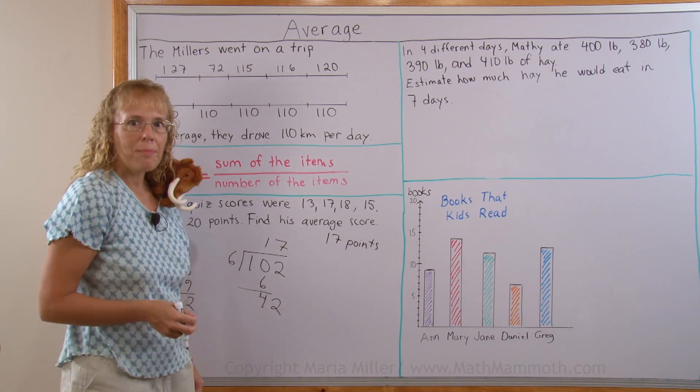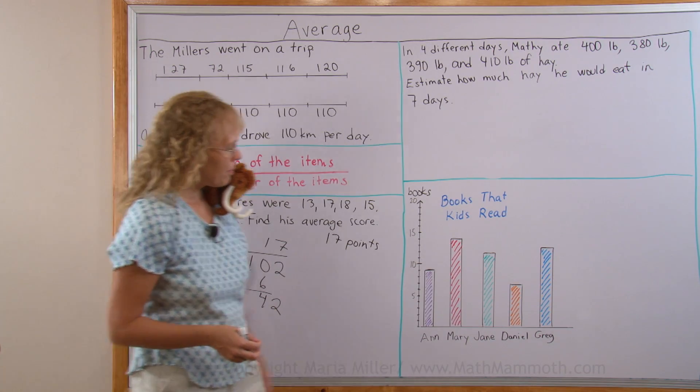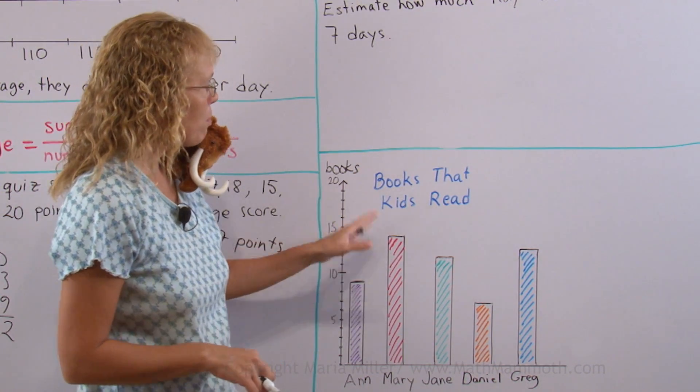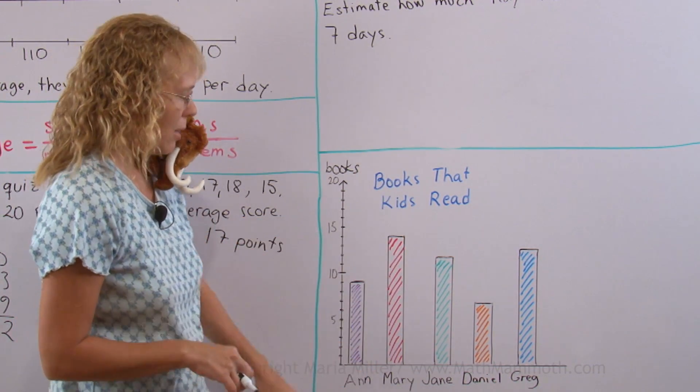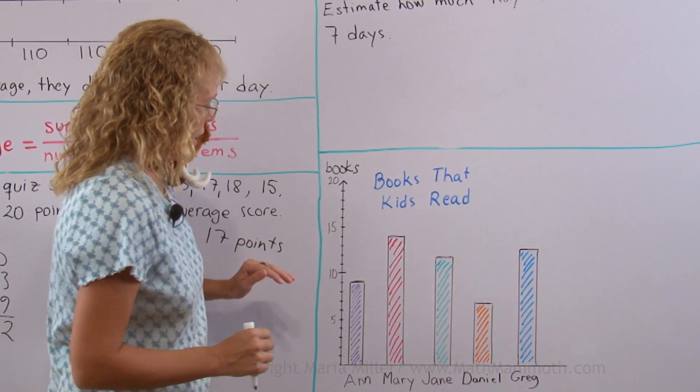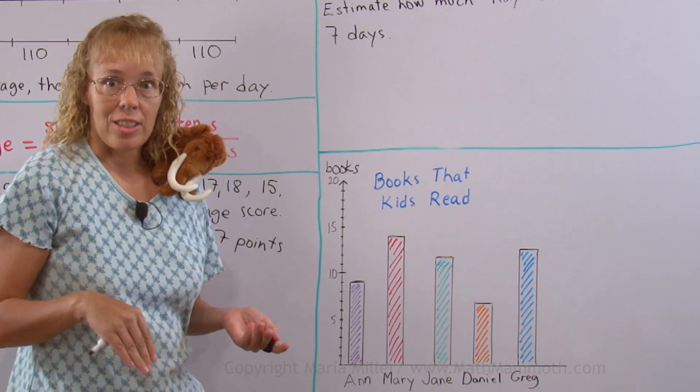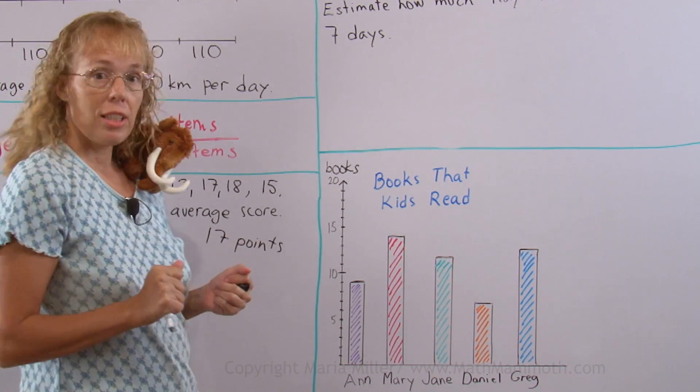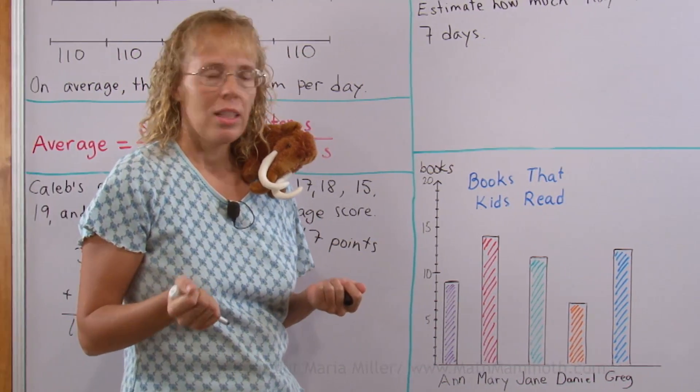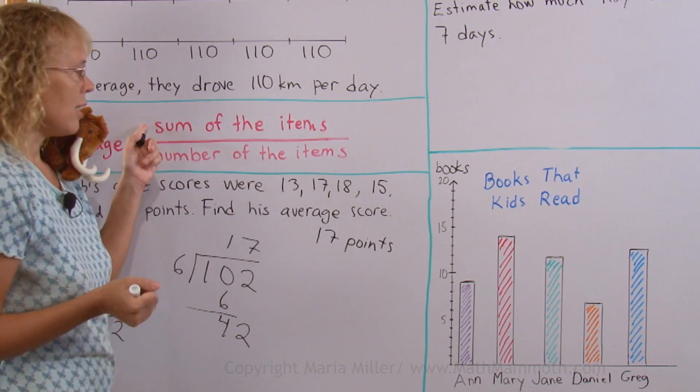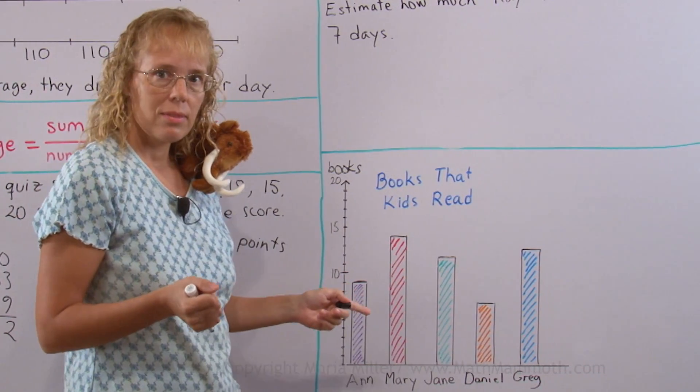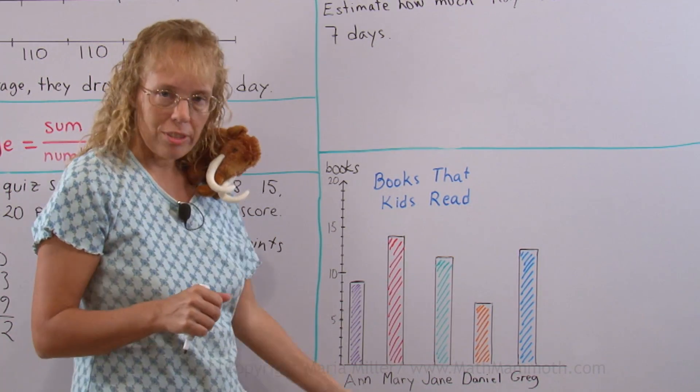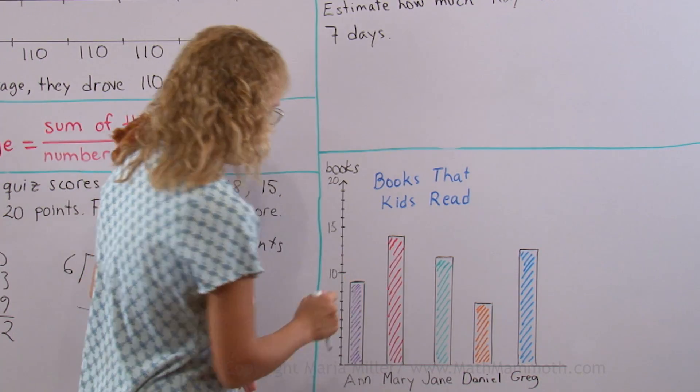Now let's look at another example where we have a bar graph. This bar graph is showing us the books that kids read. Maybe over the summer or I don't know. And we need to find the average number of books that they read. And at first it looks like I don't have any numbers to add, right? I mean to find the average I need to add up something. But there's nothing to add. At first it looks like.